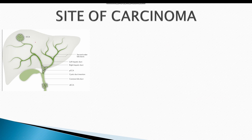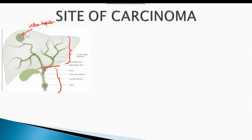Cholangiocarcinoma is formed within the bile ducts, which are either intrahepatic or extrahepatic. Tumors can be formed within the intrahepatic bile ducts — this is called intrahepatic cholangiocarcinoma. Tumors also form at the junction of the right and left hepatic ducts, and in the distal portion of the bile duct, which lies just behind the first part of the duodenum.